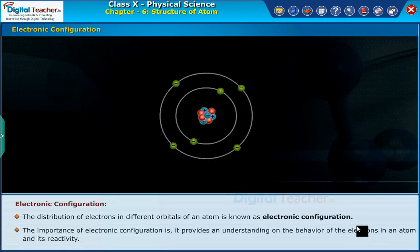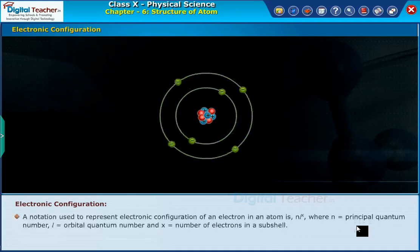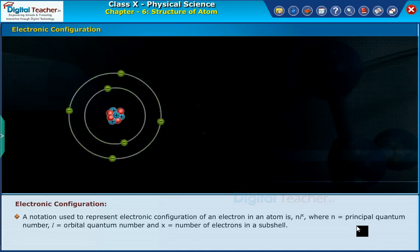The importance of electronic configuration is it provides an understanding on the behavior of the electrons in an atom and its reactivity. A notation used to represent electronic configuration of an electron in an atom is shown on the screen.